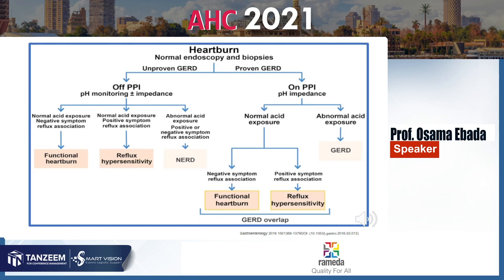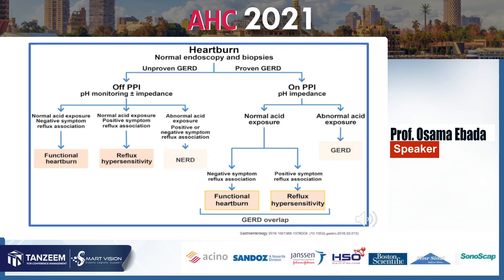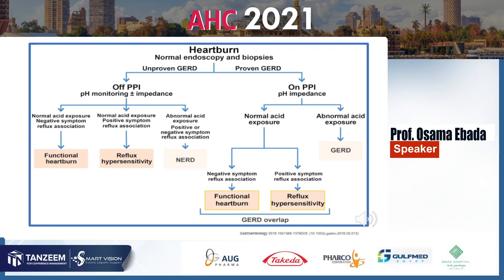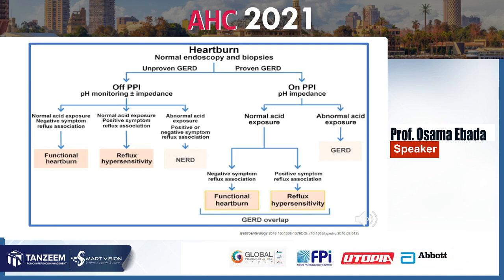If GERD is proven and the patient is on PPI with abnormal acid exposure, it is GERD. If acid exposure is abnormal but symptom association is negative, it is functional heartburn overlapping with GERD. If there is symptom association, it is GERD overlapping with reflux hypersensitivity. So we can have functional heartburn, reflux hypersensitivity, NERD, GERD overlap, or pure GERD.